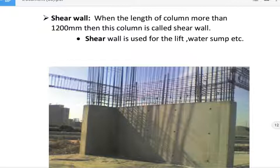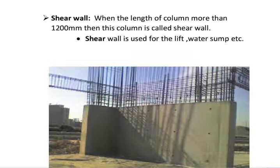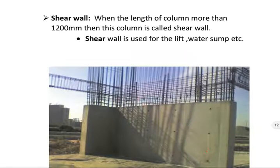Next, shear wall. When the length of a column is more than 1200 mm, this column is called a shear wall. Shear wall is used for lift, water sump, etc. Shear wall is shown in figure.